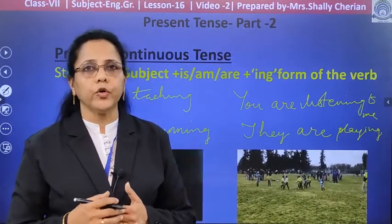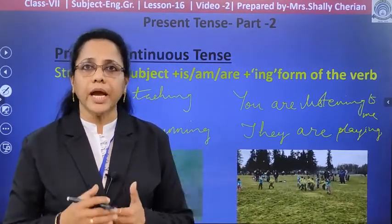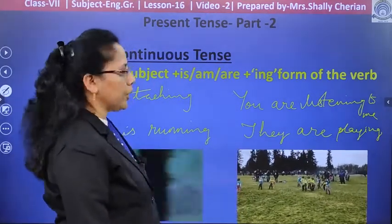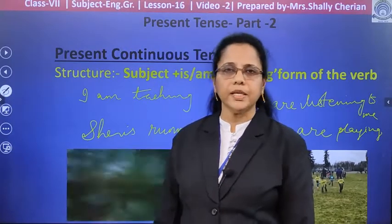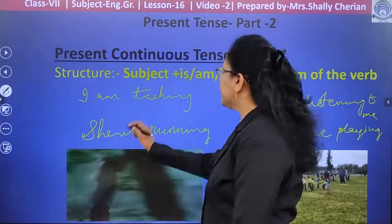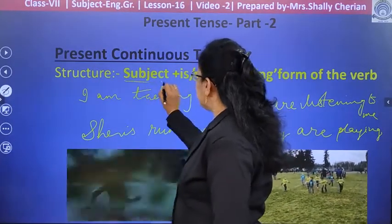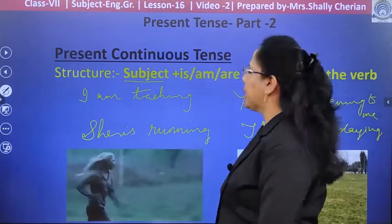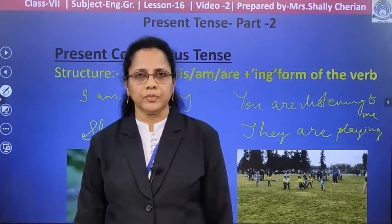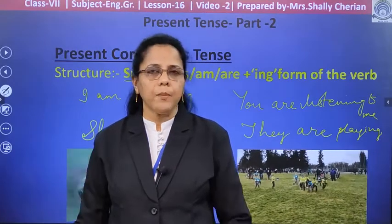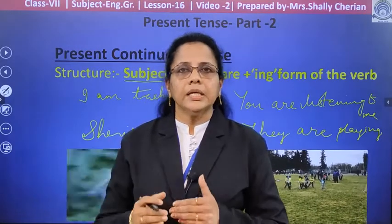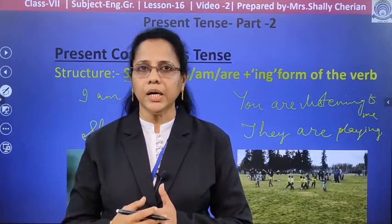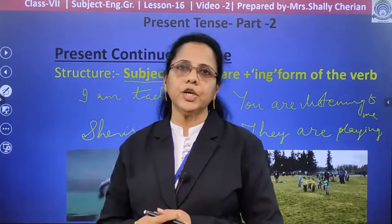Present continuous tense is mostly used to express actions which are going on at the time of speaking. Now let's see the structure of present continuous tense — how to form a sentence. The structure is: subject plus is, am, or are, plus the ing form of the verb.